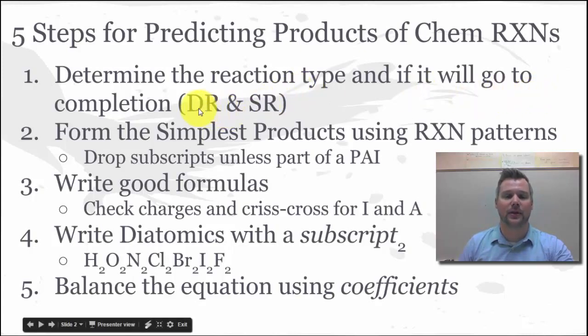Recall that for double replacement you need to either make water, a gas, or a precipitate, and for single replacement the lone element needs to be more active than the like particle that it's trying to replace. We have a resource, our gold sheet, that we can use to help us with both of those.